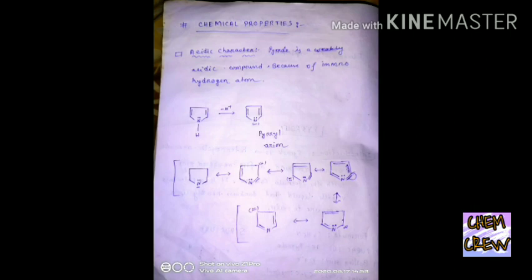In the case of pyrrole anion, you can see the lone pair of nitrogen can delocalize to the whole ring and all the carbons get partially negative charge. But in pyrrole, there is no extra lone pair on nitrogen.